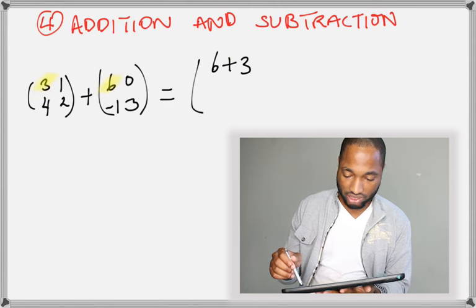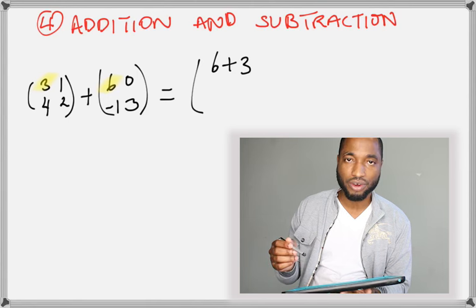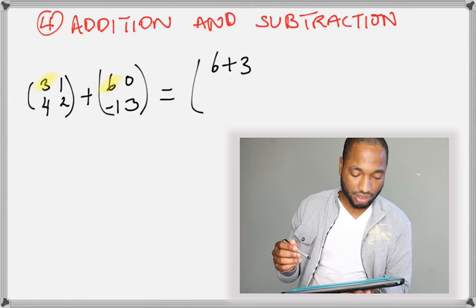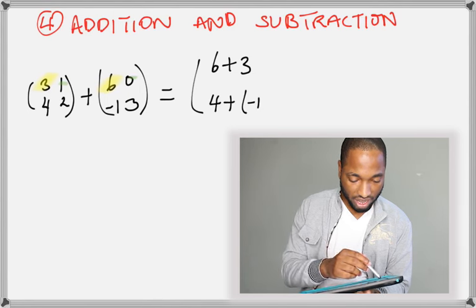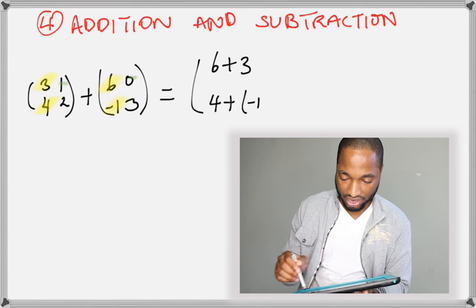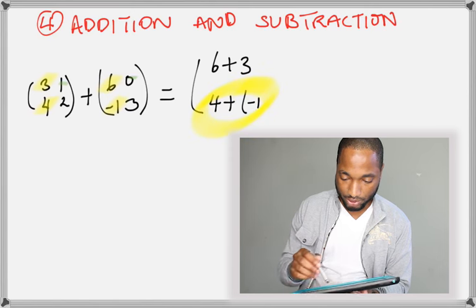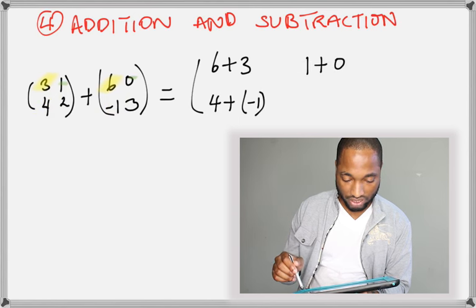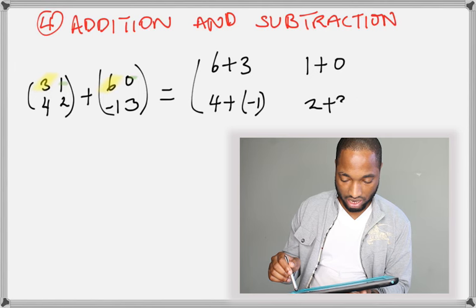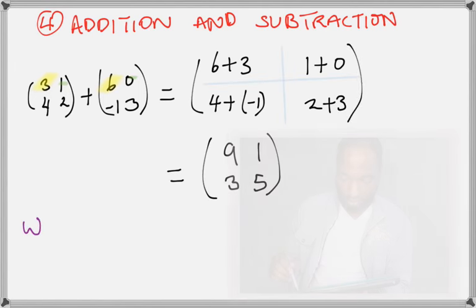Alright, so 3 and 6. 6 plus 3. You can put it any order you want, right? 6 plus 3. And next number, 4 plus negative 1. That's this 4 plus negative 1 here. And that's going to go on the bottom spot there. Right? So, we have the 1 and the 0. Right? And then we have 2 and 3. Now, after you have it there, I just put the blue lines to separate the individual spots they go into, right?